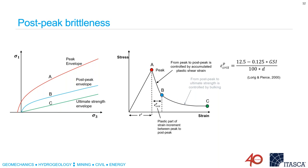Now let's talk about the post-peak brittleness. In IMAS, as the material weakens from peak to post-peak, it is a function of accumulated plastic shear strain. IMAS calculates the critical plastic shear strain — or e-crit for simplicity — and then linearly interpolates cohesion and friction angle between these two points as plastic shear strain approaches this value. This critical plastic shear strain is calculated using an empirical relationship that Lorig and Pierce came up with from calibrated models, and it honors the GSI and has an inverse relationship to the zone size — because as zone size decreases it becomes more and more brittle.